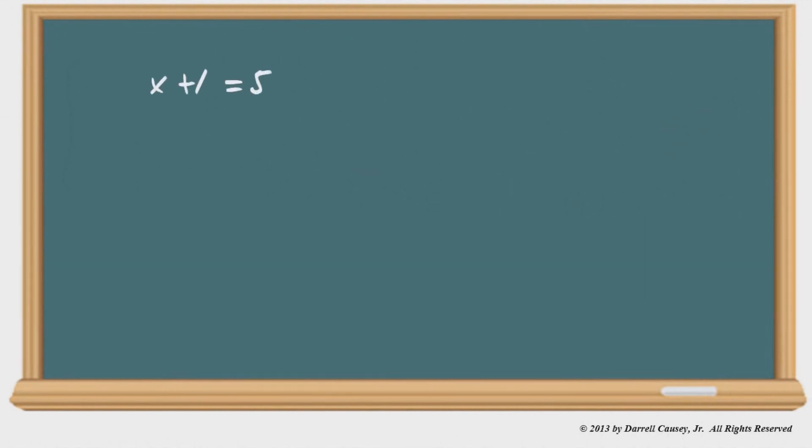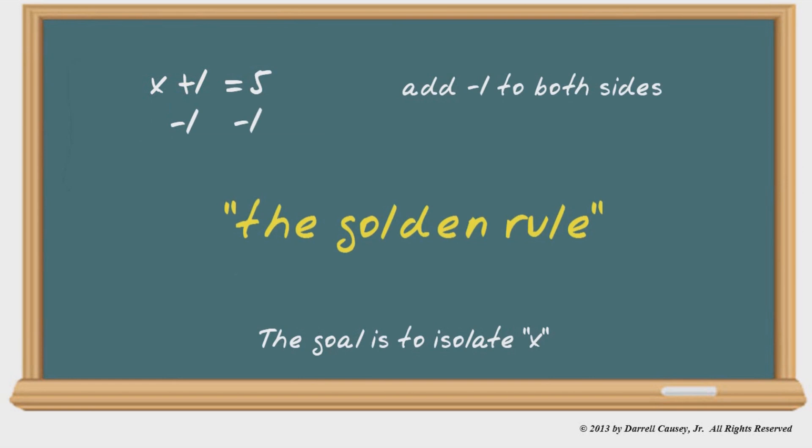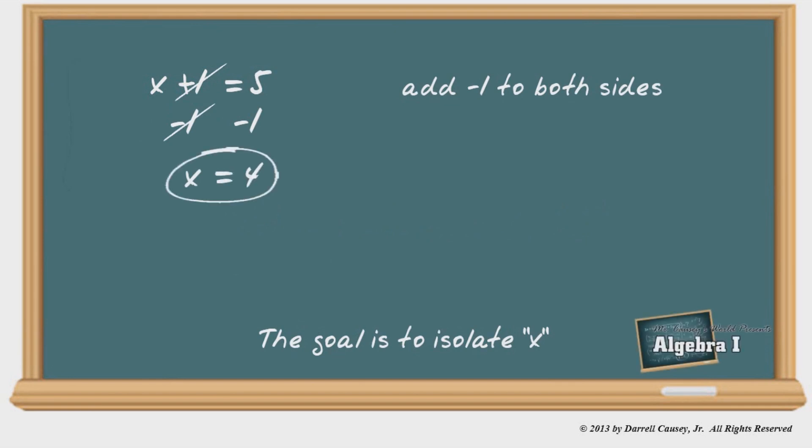x plus one equals five. Now my goal, my target, is to isolate x. Get x all by itself. So what I'm going to do is I'm going to add a negative one to both sides. By doing that, the ones cancel out. And I get x equals four. Very simple, very straightforward. But the important part here is realizing the goal to get x by itself.